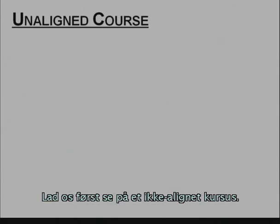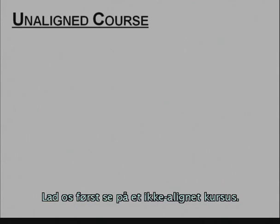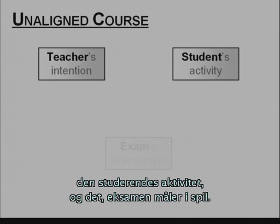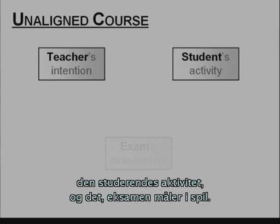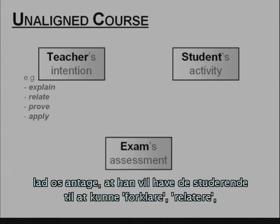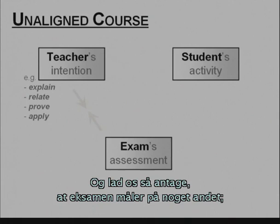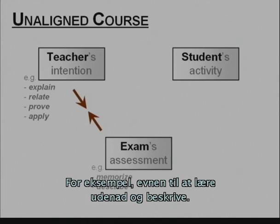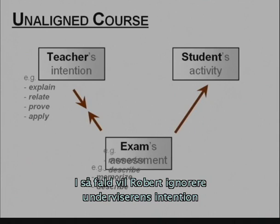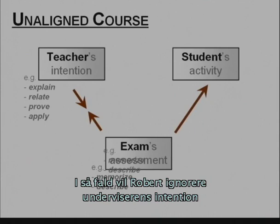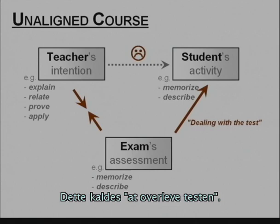Let's first have a look at an unaligned course. We have the teacher's intention, the student's activity, and the exam's assessment in play. The teacher has an intention — suppose he wants the students to be able to explain, relate, prove, and apply. Now suppose the exam measures something else, for example, the ability to memorize and to describe. In this case, Robert will focus only on the skills required for the test, disregarding the teacher's intentions.